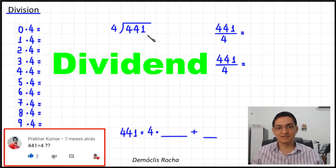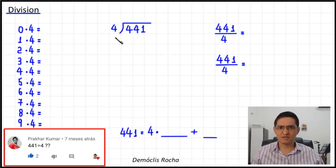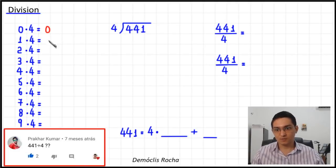In this division, 441 is the dividend — the value we will divide in four equal parts. Four is the divisor. It's always good that we know by heart the multiplication table of the divisor before we start the division, so let's write down the multiplication table of four. Zero times four is zero, because it's four not even once. One times four equals four.